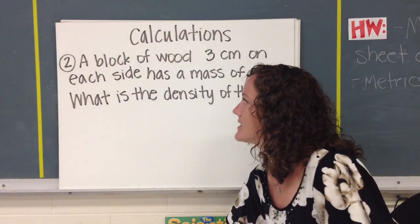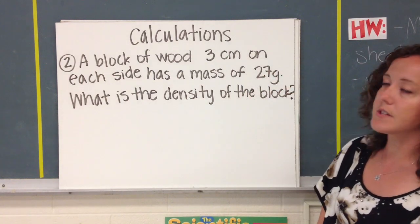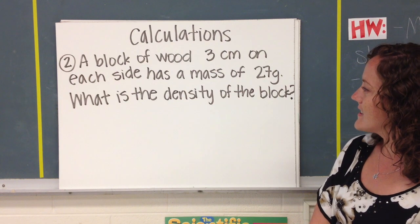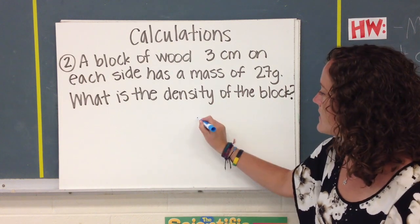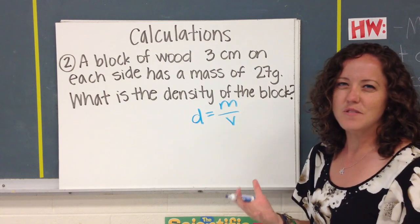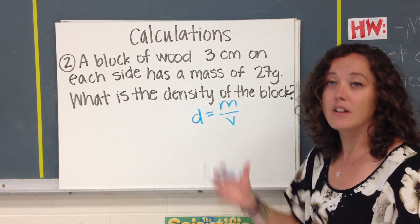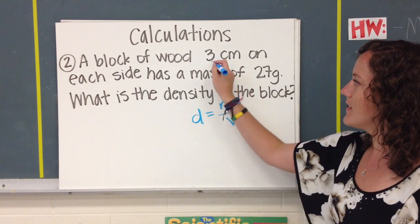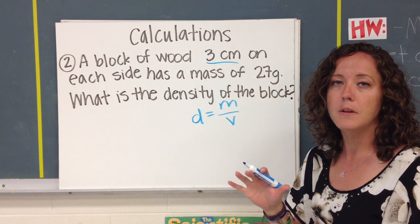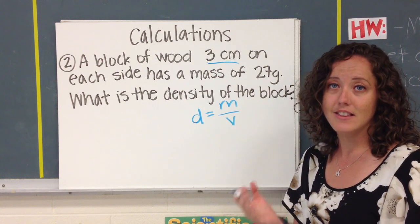The second one says a block of wood, 3 centimeters on each side, so we've got a nice little cube, has a mass of 27 grams. What is the density of the block? Okay, our density formula is mass divided by volume. We're not really given volume in this problem, but we're given the information we need in order to find volume. We know the volume of a cube is the length times the width times the height.